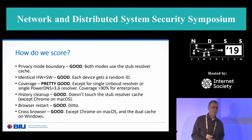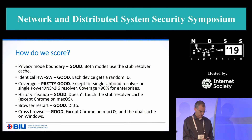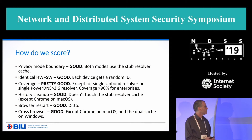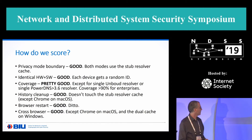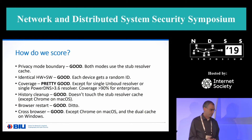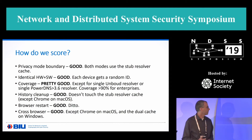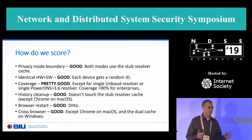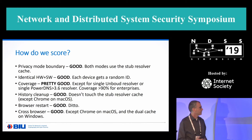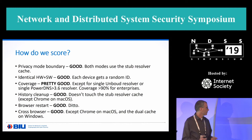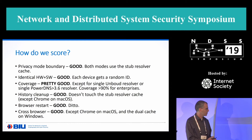So how do we score with respect to the six requirements or challenges? Privacy mode boundary: we are doing very well — both modes use the same stub resolver DNS cache, so we get the same ID. Identical hardware and software: we are doing well because each device gets its own ID. Coverage is pretty good — we cover over 90% of scenarios for enterprises. History cleanup: we are doing well except for Chrome on macOS. Browser restart: we are doing well. And being cross-browser: we are doing well except for some combinations like the Windows dual-cache.